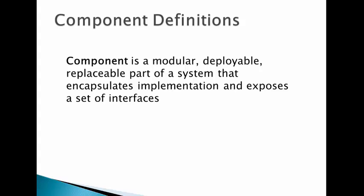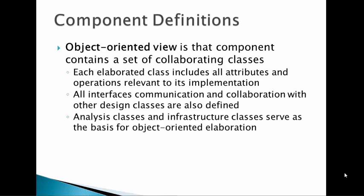There are three views of components. The first is the object-oriented view, where a component contains a set of cooperating classes. Each class includes all attributes and operations relevant to its implementation. Interfaces, communication, and cooperation with other design classes are also defined. Analysis classes and infrastructure classes serve as the basis for object-oriented operation.